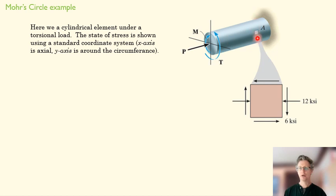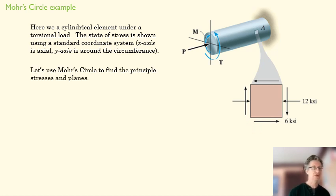We find that our state of stress right here on the outside of our rod, we have a compressive stress in this direction, no normal stress in the y direction, and a shear stress of negative 6 ksi, because it's going in the clockwise direction on the x-face.